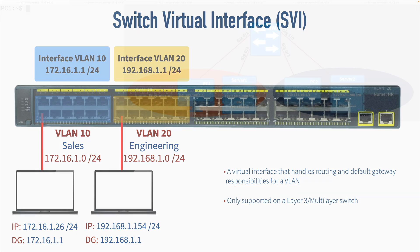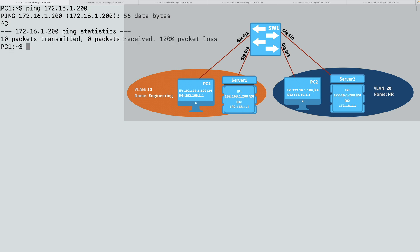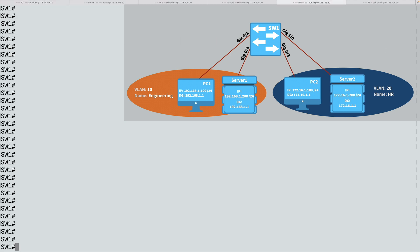Now let's go out to a live interface and set this up. In this topology, I've removed the router and the trunk configuration used with router-on-a-stick, because this switch can act as a Layer 3 switch and support SVIs. To confirm we're not currently doing routing, let's make sure PC1 cannot ping server 2. We ping 172.16.1.200 and give it a few seconds for ARP to resolve. That was unsuccessful. Let's fix that by adding a couple of SVIs on Switch 1.